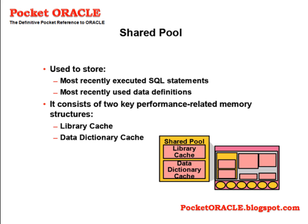The data dictionary cache stores recently used object definitions — descriptions of tables, indexes, users, and other metadata definitions. Keeping such definitions in memory, rather than having to read them repeatedly from the data dictionary on disk, enhances performance.